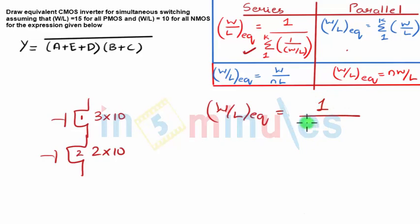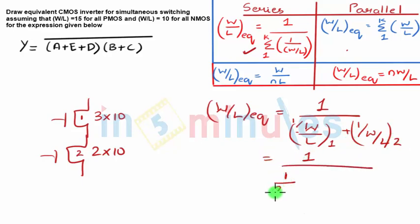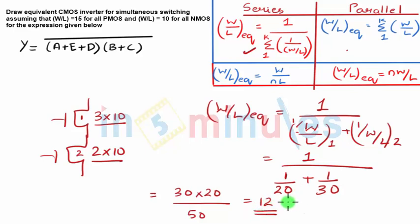Let's call this transistor 1 and this is transistor 2. So W by L equivalent is equal to 1 by 1 upon W by L of 1 plus 1 by W by L of 2, which is nothing but 1 by 1 upon 20 plus 1 upon 30, which is pure math from here, that is nothing but 30 into 20 upon 50, which is nothing but 12. So my W by L for NMOS equivalent is nothing but 12.